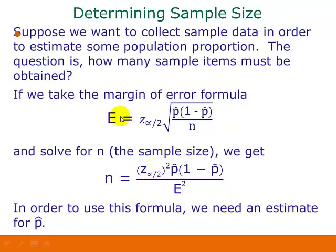If we take our margin of error formula and solve it for n, the sample size, here's what we get. We have to square our critical value, and then take our p-hat times 1 minus our p-hat, and divide by our margin of error squared. Now the problem with this is that we don't have p-hat unless we've already collected the sample data. We can't collect the sample data until we know what sample size to use. So in order to be able to use this formula, we need some kind of estimate for our sample proportion.